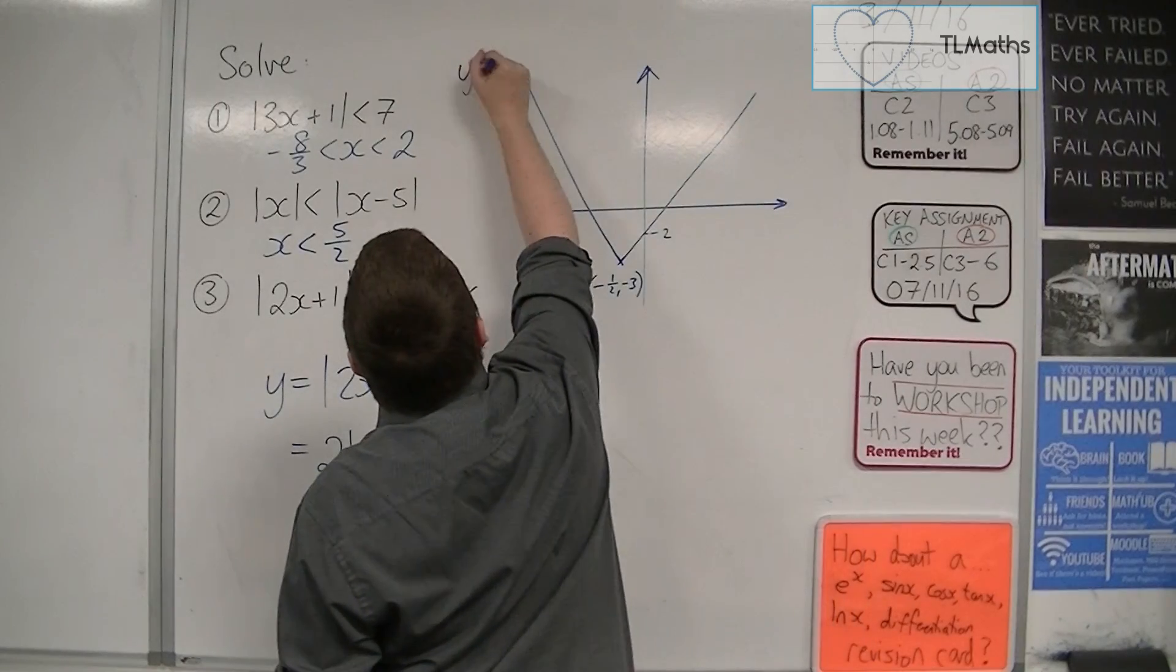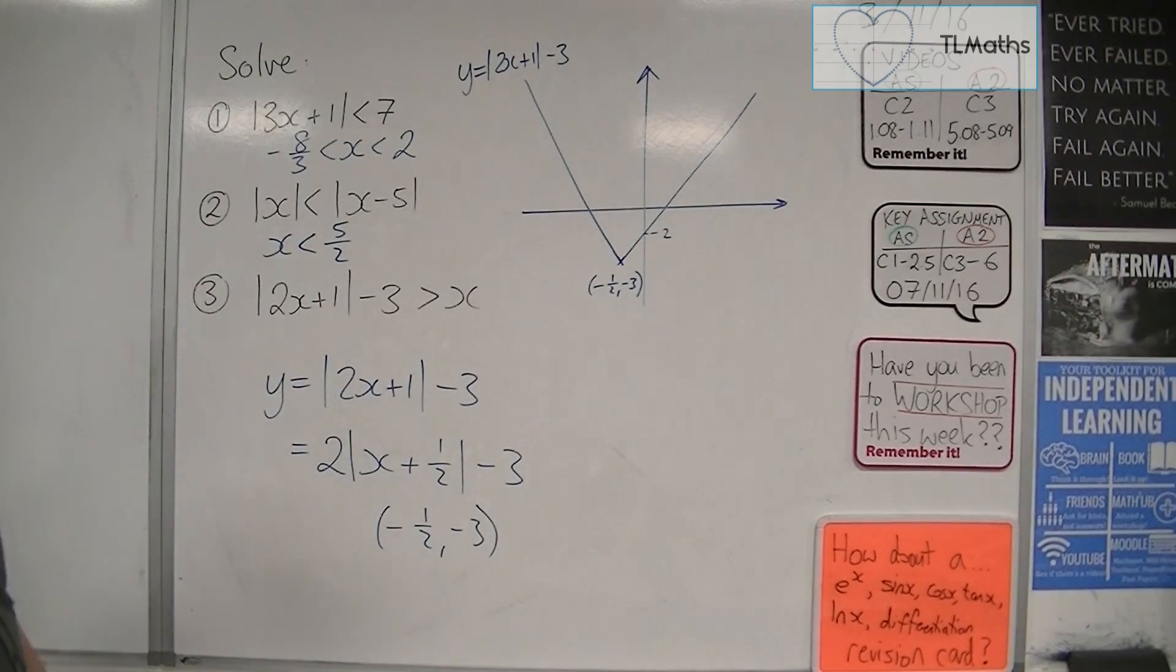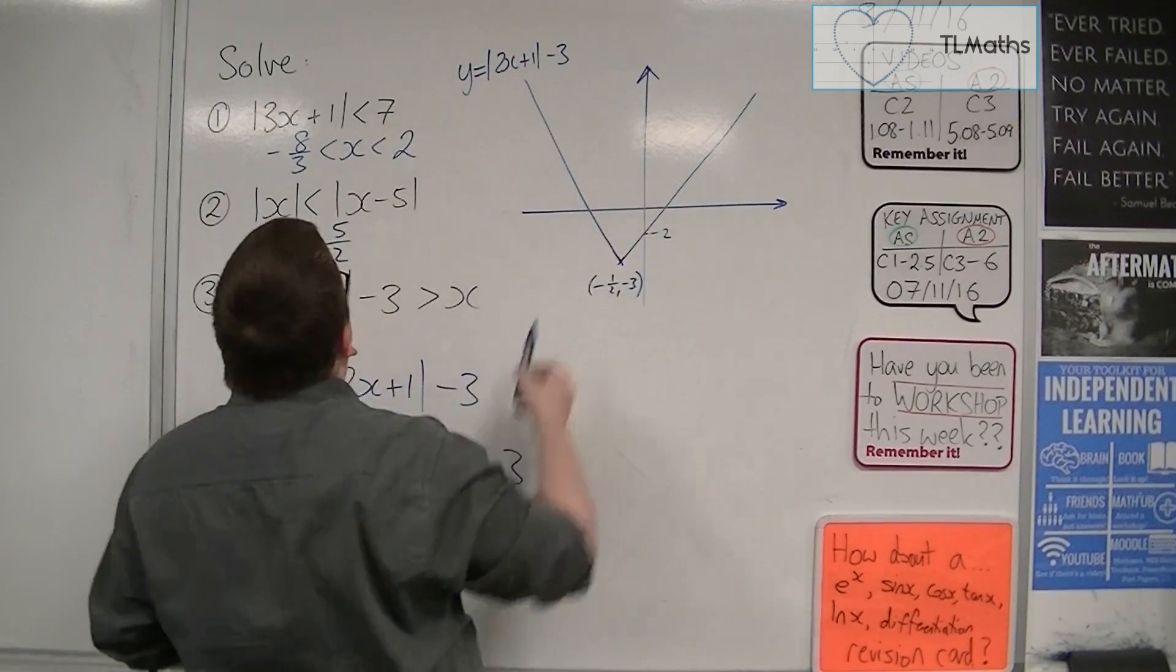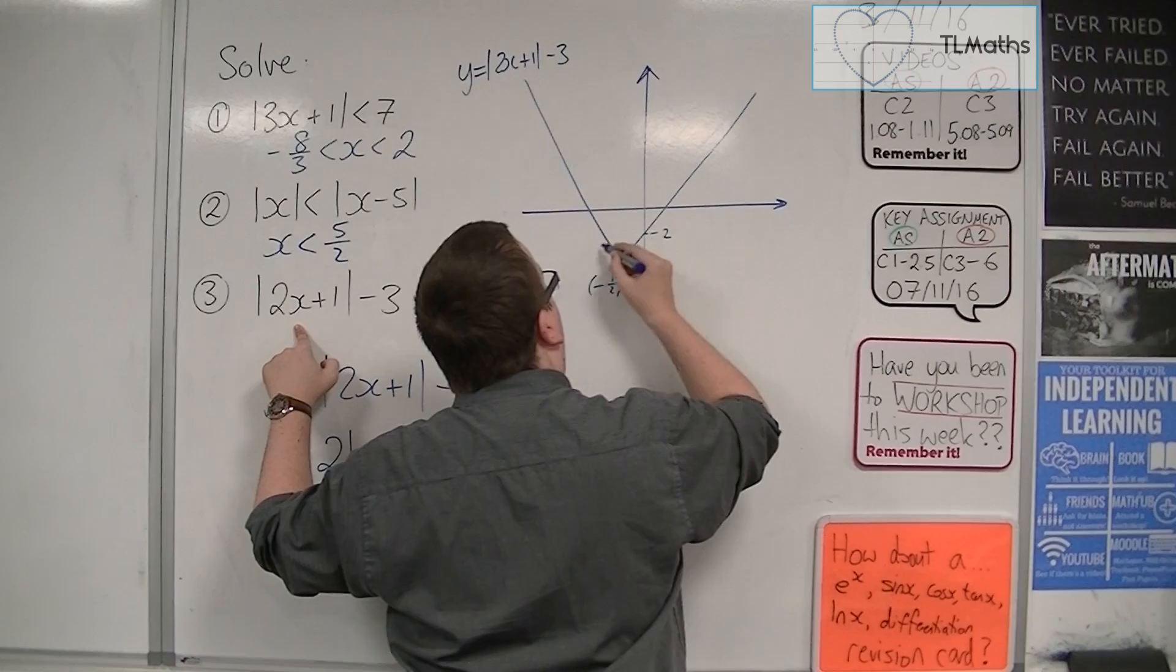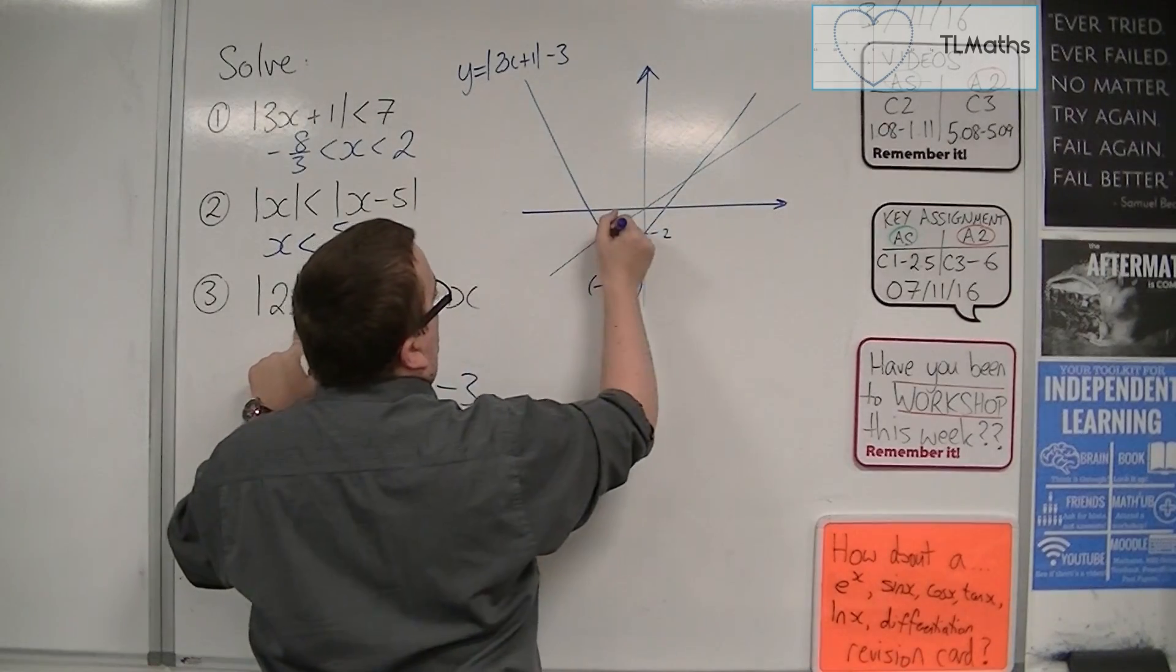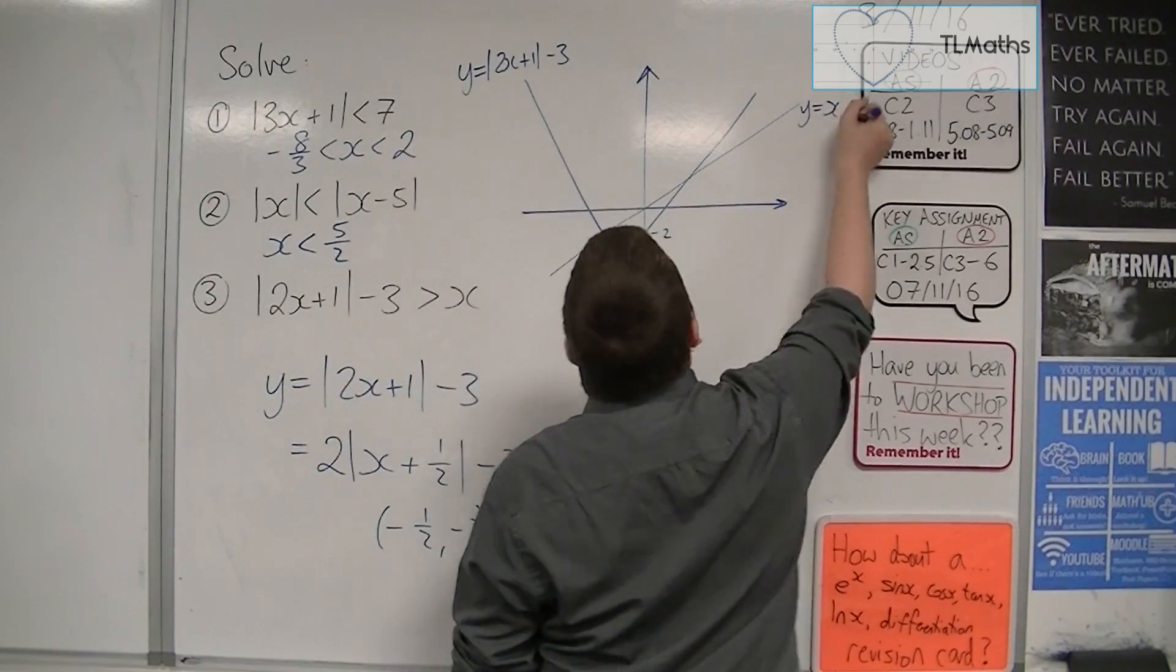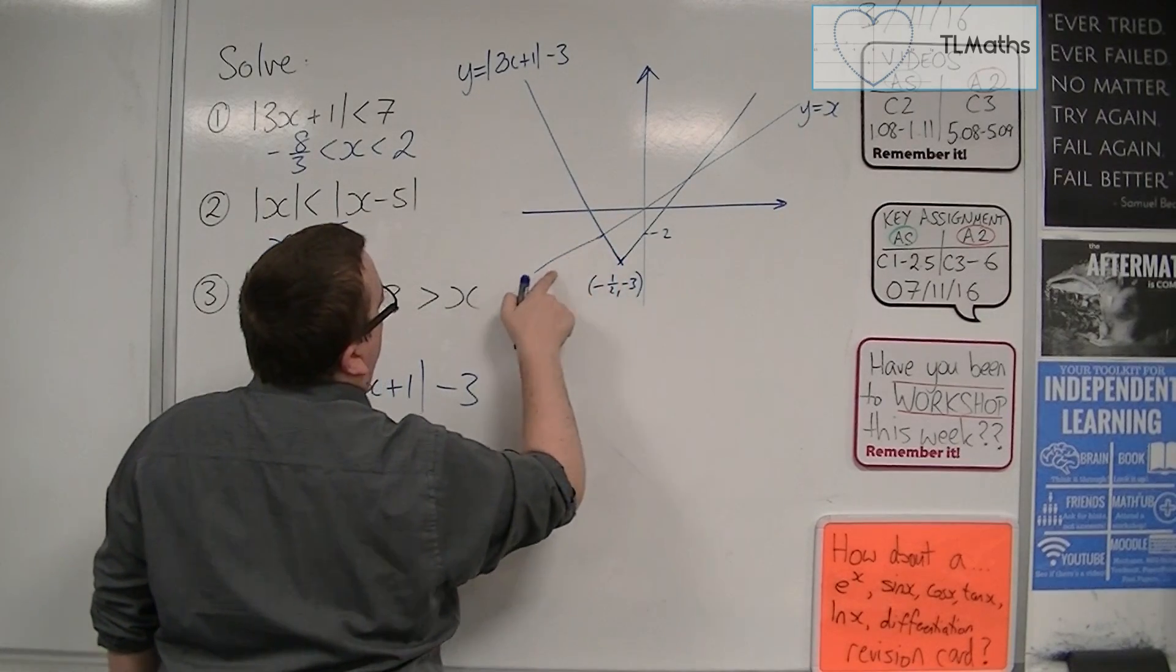So there's my y equals modulus 2x plus 1, take away 3. Now, y equals x is a diagonal line. It's not going to have a steeper gradient than the 2x plus 1. So it's going to be crossing through the v-shape at two points. Here and here. So that's y equals x. A bit of a wobbly y equals x. It's a bit more like that, isn't it? Still not perfect, but it'll do.